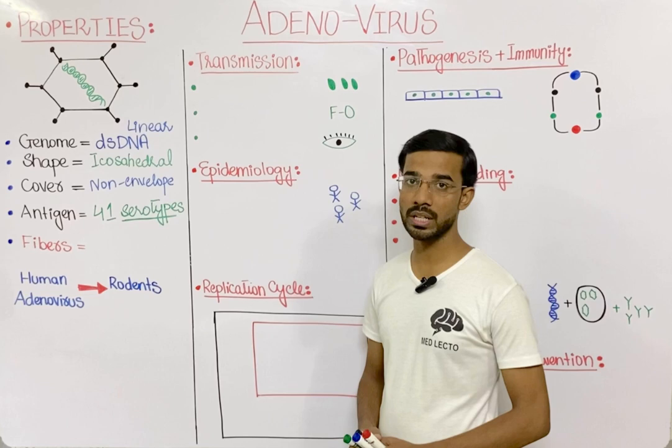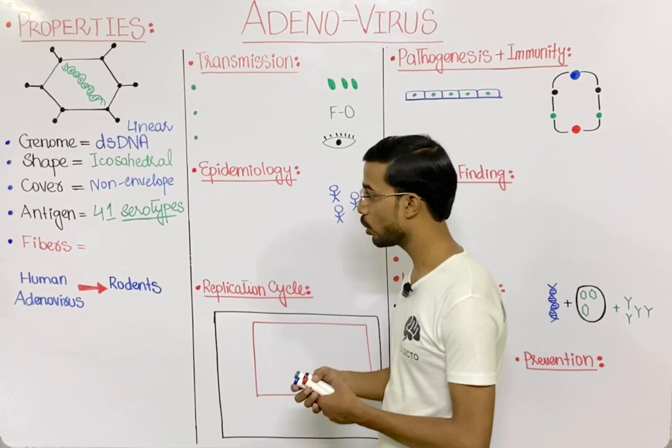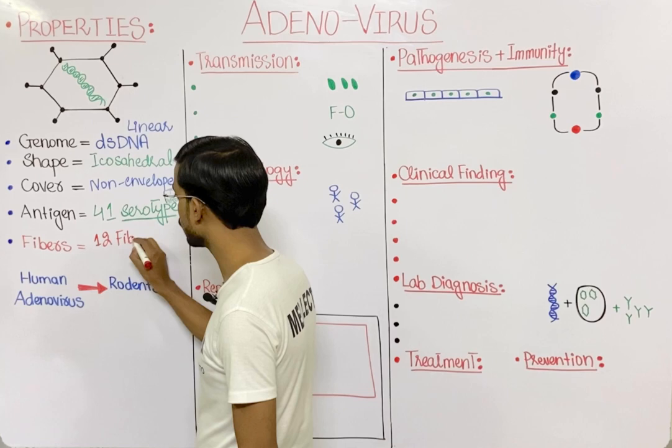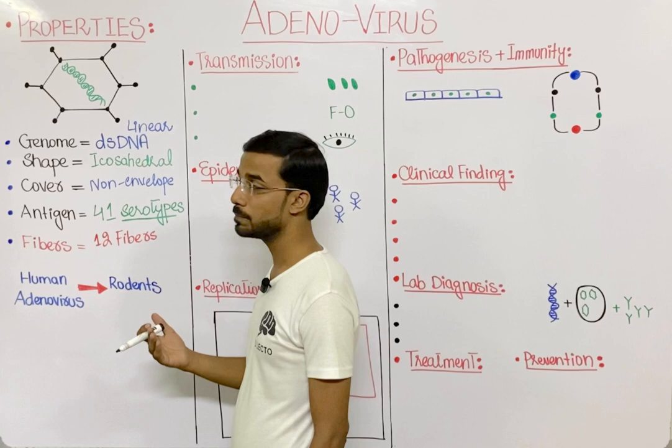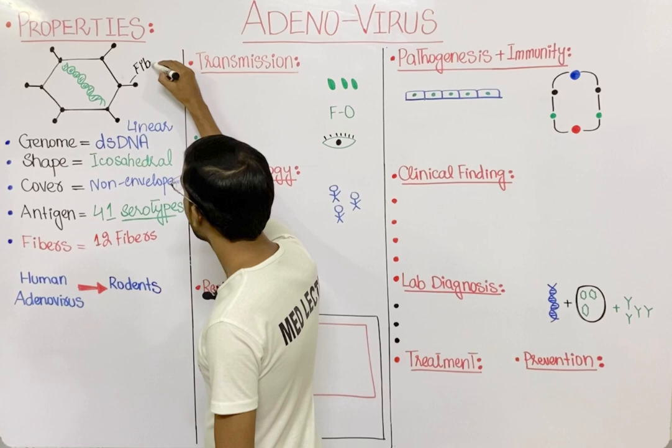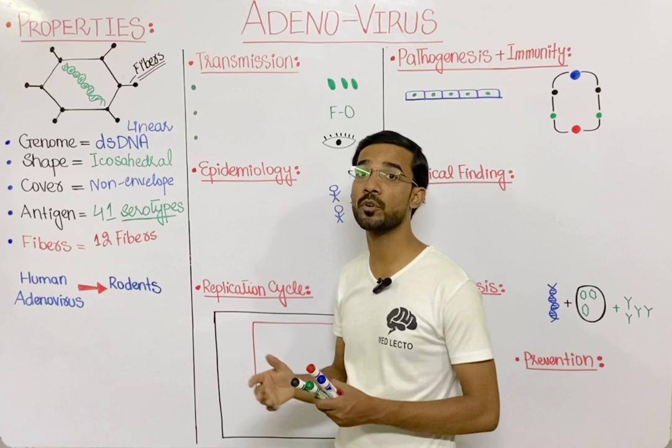The last most important feature is the fibers that protrude from the adenovirus. There are 12 different fibers. If you look at the structure, the center contains the double-stranded DNA, outside you will see the icosahedral capsid, and then the 12 fibers protruding outward.